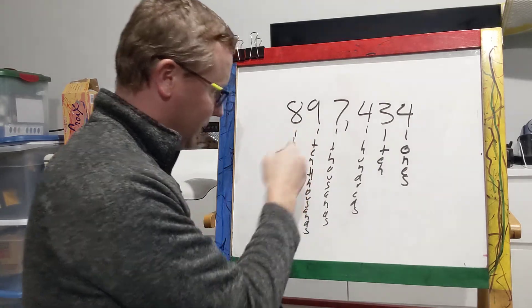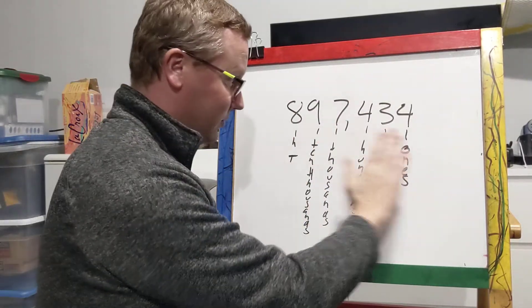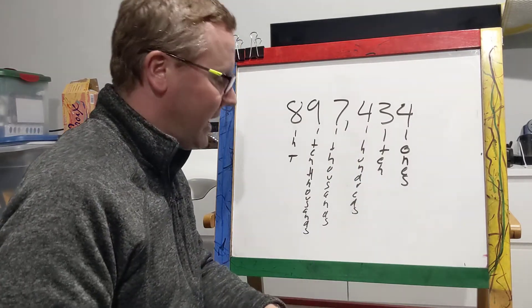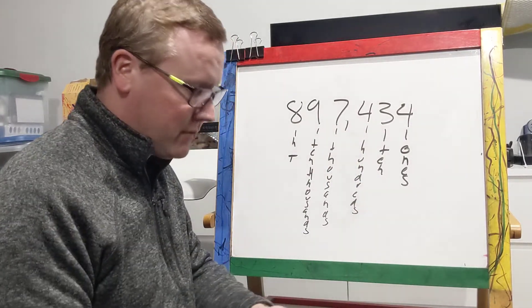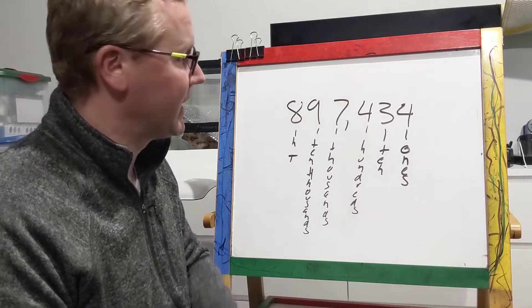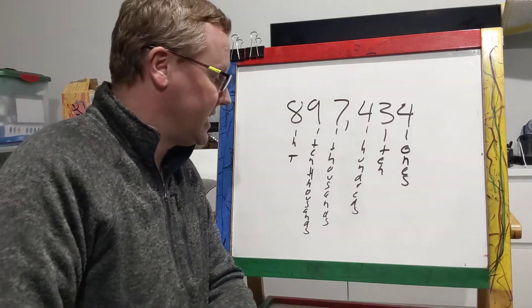I'm just gonna write HT because I don't want to write it all out. But each one of these has a place value. When we're rounding, we might give you a question like round to the nearest ten thousands place.